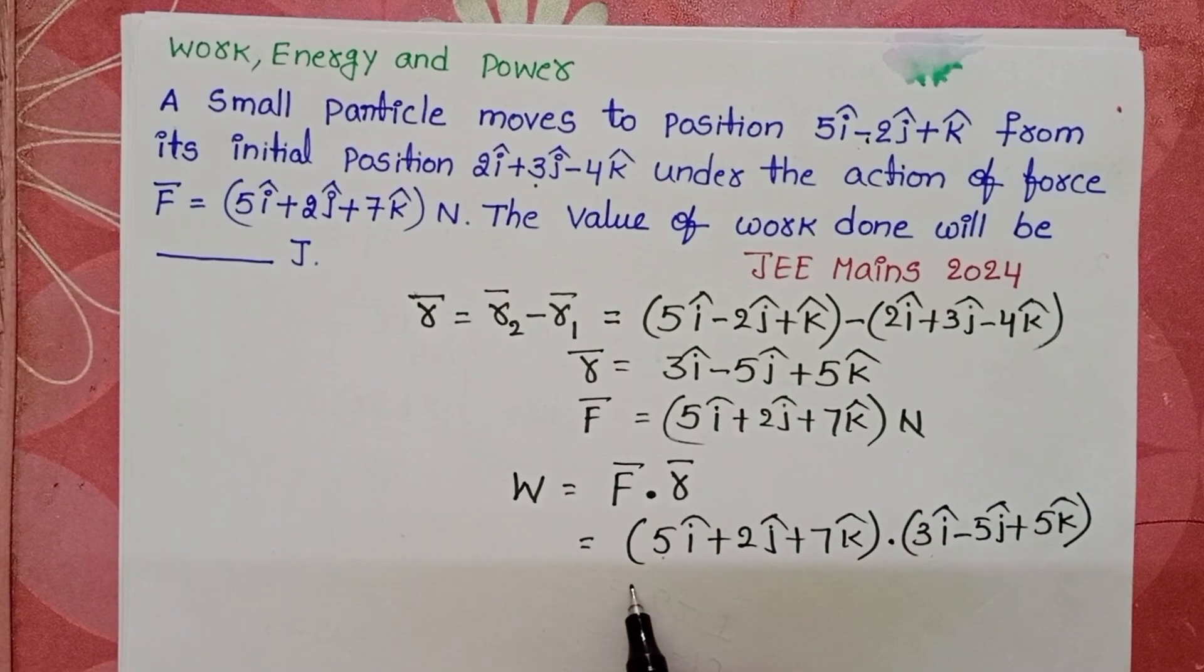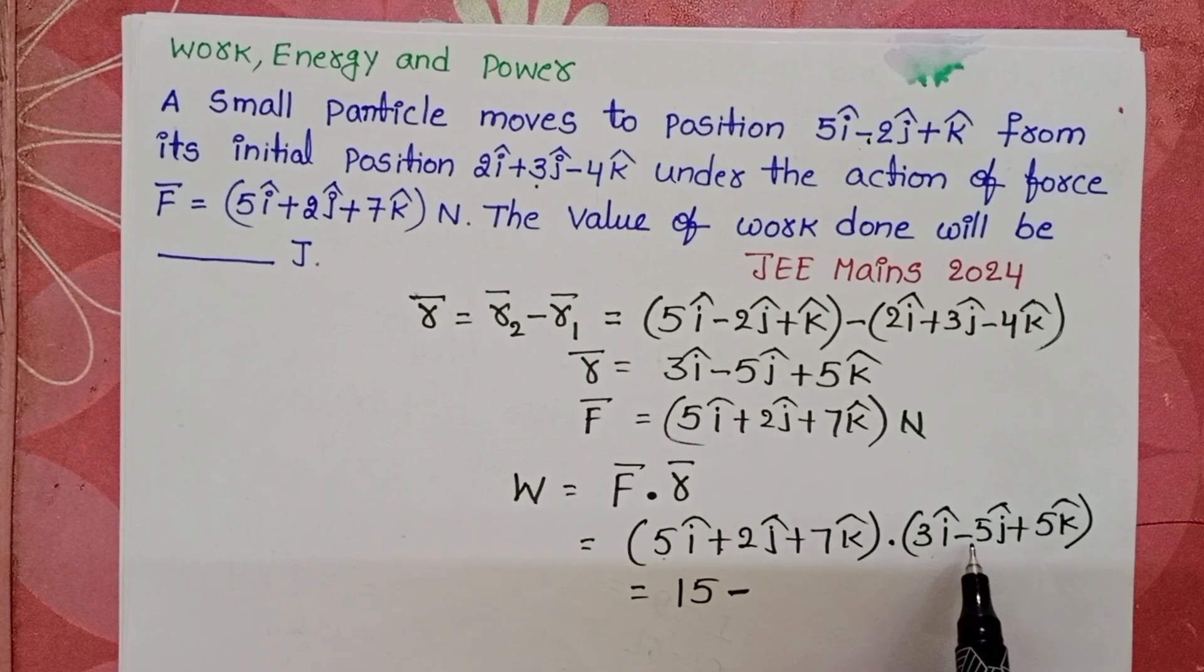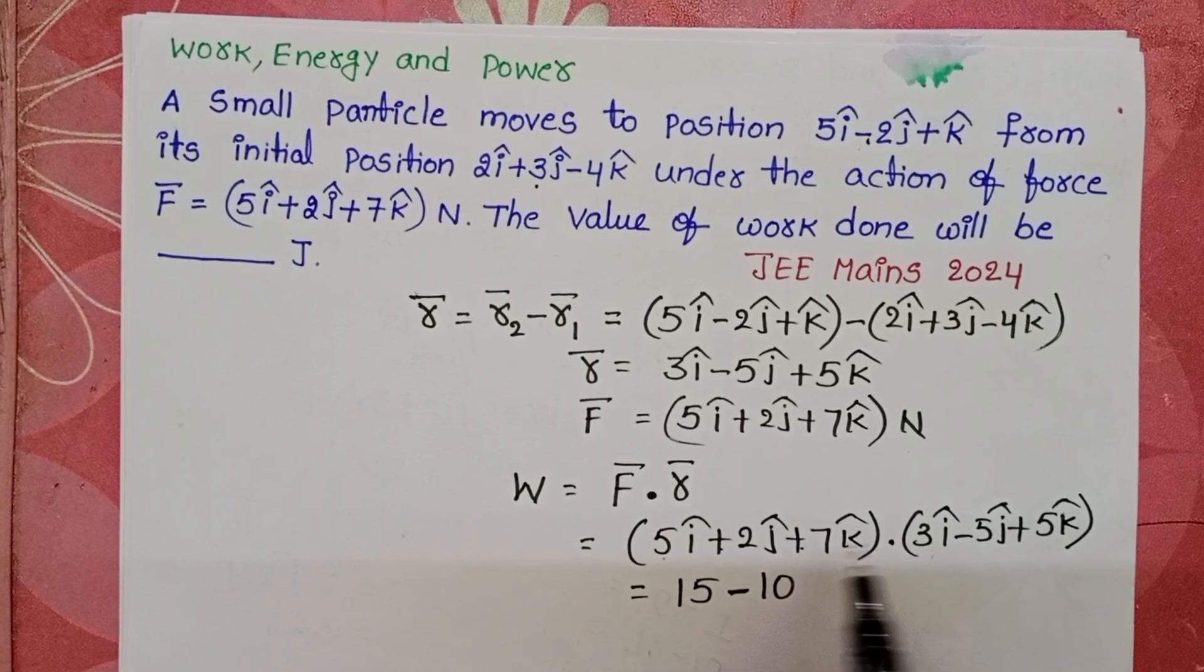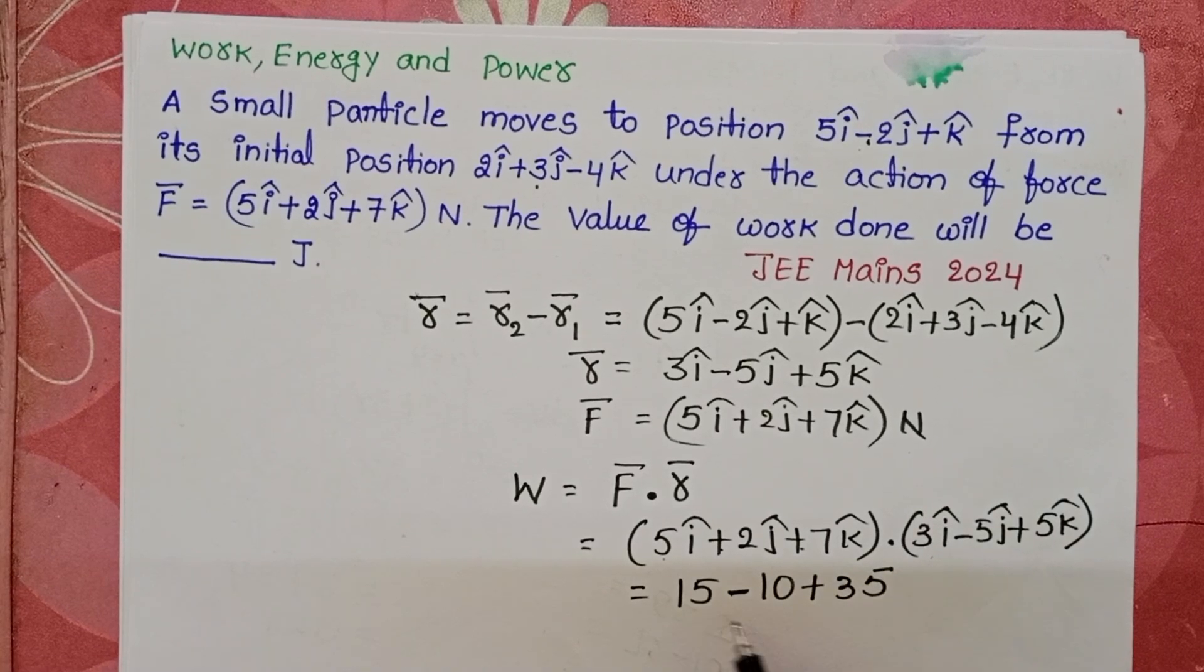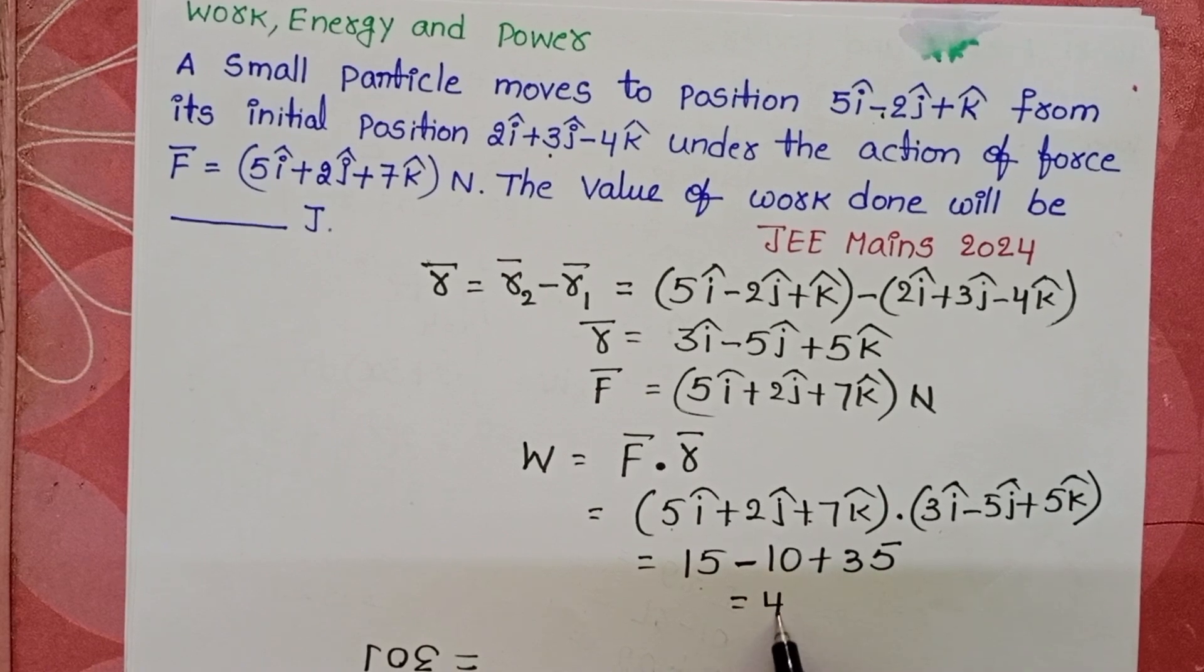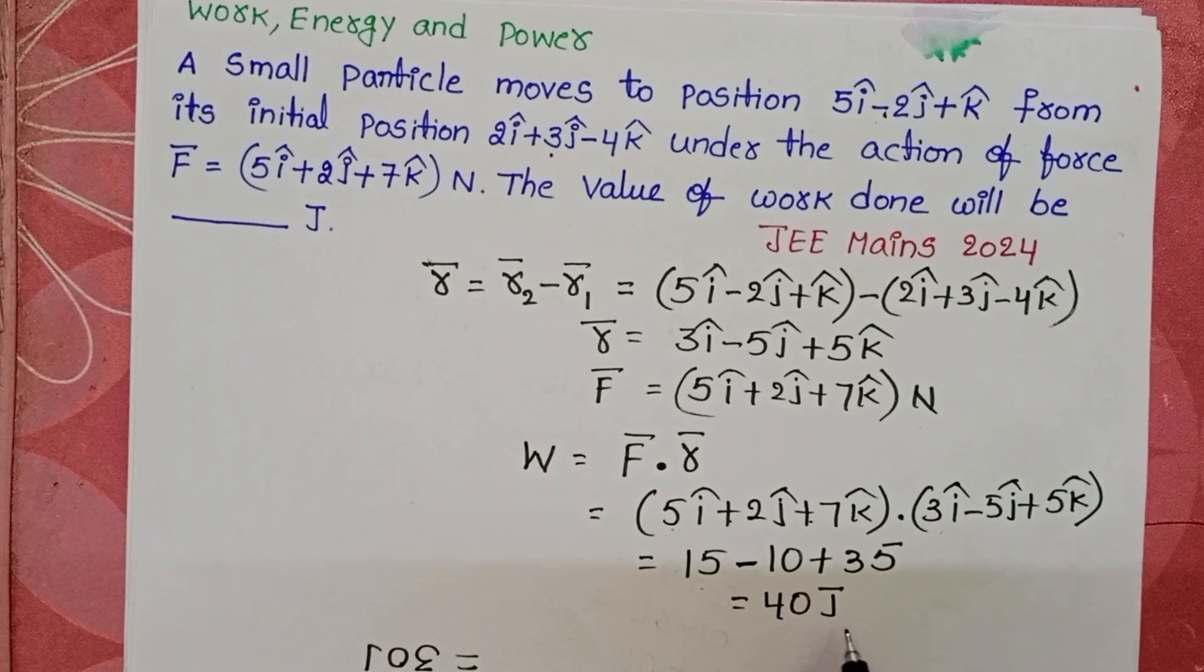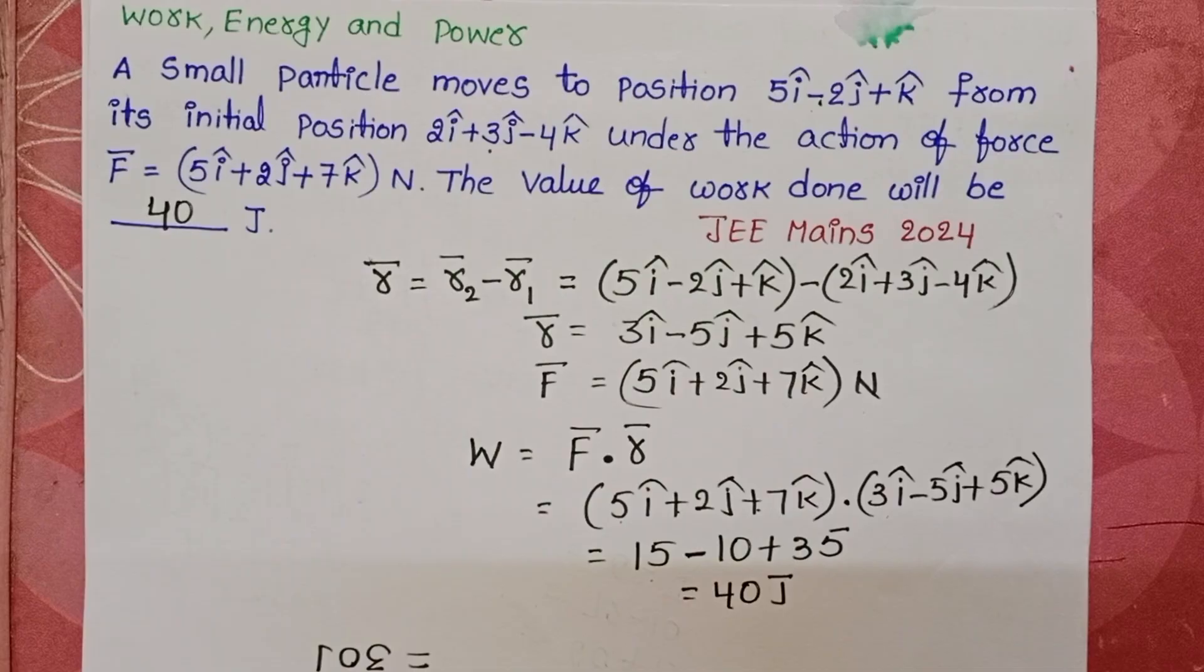5 into 3 is 15. Plus 2 into minus 5 is minus 10. Plus 7 into 5 is 35. 15 minus 10 equals 5. 5 plus 35 equals 40. Work done equals 40 joules.